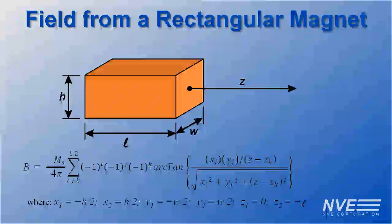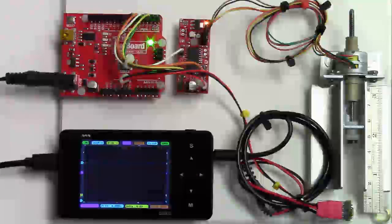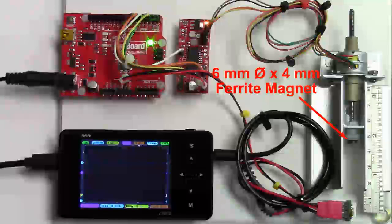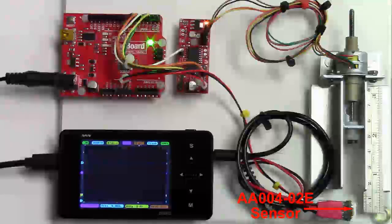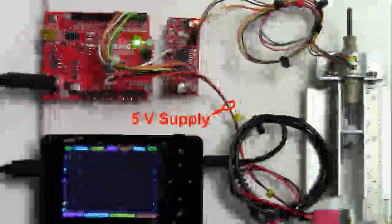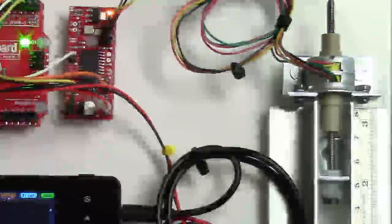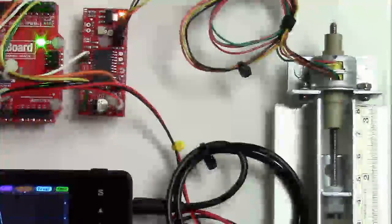Let's see how the app compares to actual measurements. We're using the 6x4mm magnet from the app, an AA004-02E sensor, and a 5V supply. A linear stepper motor is driven by an Arduino board, and it moves the magnet back and forth.